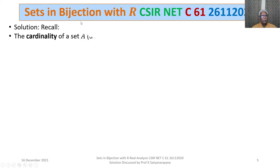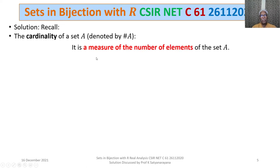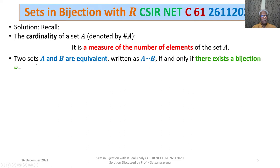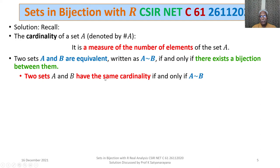We recall the following. The cardinality of a set A, denoted by |A|, is defined as a measure of the number of elements of the set A. Two sets A and B are said to be equivalent, written as A ~ B, if and only if there exists a bijection between them. Two sets A and B have the same cardinality if and only if A is equivalent to B — that is, |A| = |B| if and only if A ~ B.